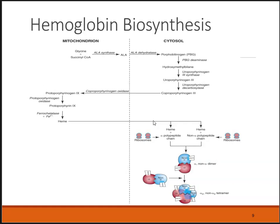ALA goes into the cytoplasm where ALA dehydrolase will make porphobilinogen. Then deaminase makes hydroxymethylbilane, with uroporphyrinogen 3 synthase making uroporphyrinogen 3, with uroporphyrinogen decarboxylase making coproporphyrinogen 3. It goes back into the mitochondria where coproporphyrinogen oxidase, then protoporphyrinogen oxidase, makes protoporphyrin 9. The second most important step is the binding of ferrous iron with the enzyme ferrochelatase to make heme. The most important steps to know are glycine and succinyl CoA with ALA synthase, and ferrochelatase with protoporphyrin 9 to make heme.